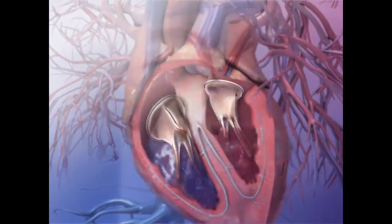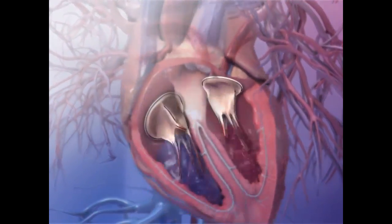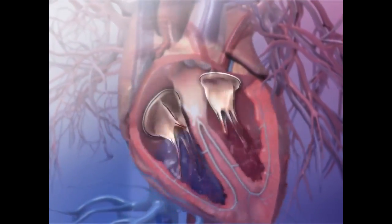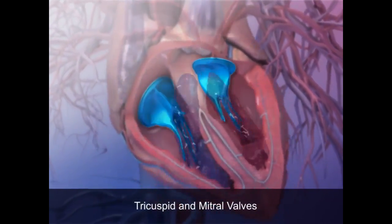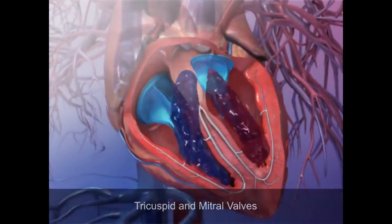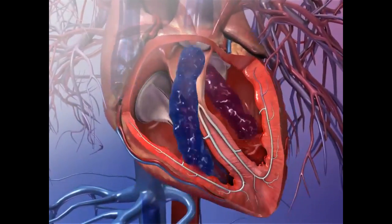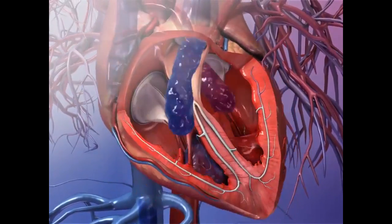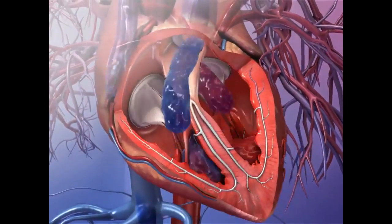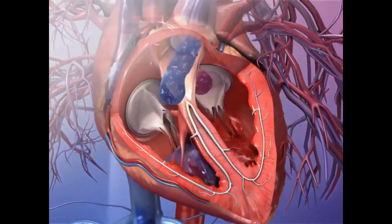The two valves located between the atria and the ventricles are called the tricuspid and mitral valves. These valves facilitate the flow of blood as it moves into the ventricles from the atria.